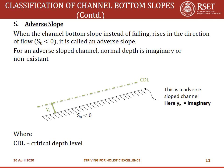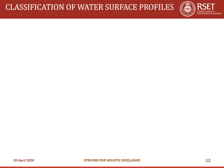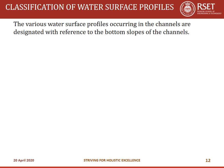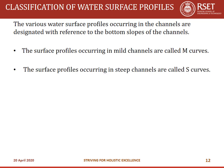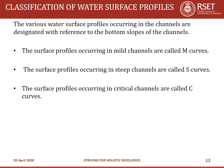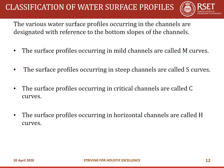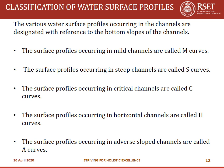Next we move to the most important part of this lecture: classification of water surface profiles. Various water surface profiles occurring in channels are designated with reference to the bottom slopes. Profiles in mild channels are called M curves, in steep channels S curves, in critical channels C curves, in horizontal channels H curves, and in adverse slope channels A curves. These are the five different types of water surface profiles.